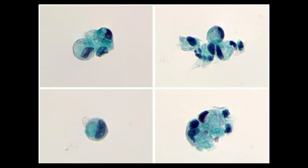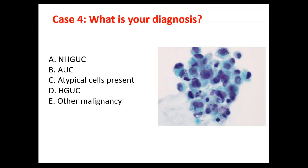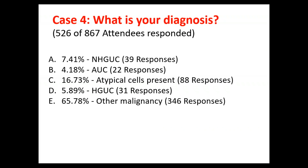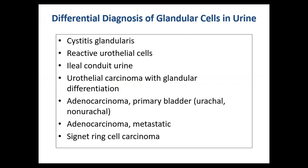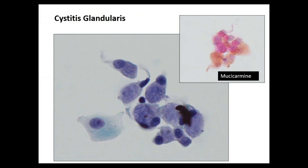About 66% of attendees said there was a malignancy, but they didn't want high-grade urothelial carcinoma — they wanted 'other malignancy.' These look like glandular cells. The differential diagnosis of glandular cells in urine includes: cystitis glandularis (glandular metaplasia in the bladder), reactive urothelial cells, signet ring-type umbrella cells, ileal conduit urines, adenocarcinoma, and other malignancies. Cystitis glandularis shows mucin-filled cells with eccentrically located but round, non-crescent-shaped nuclei, positive for mucicarmine stain.